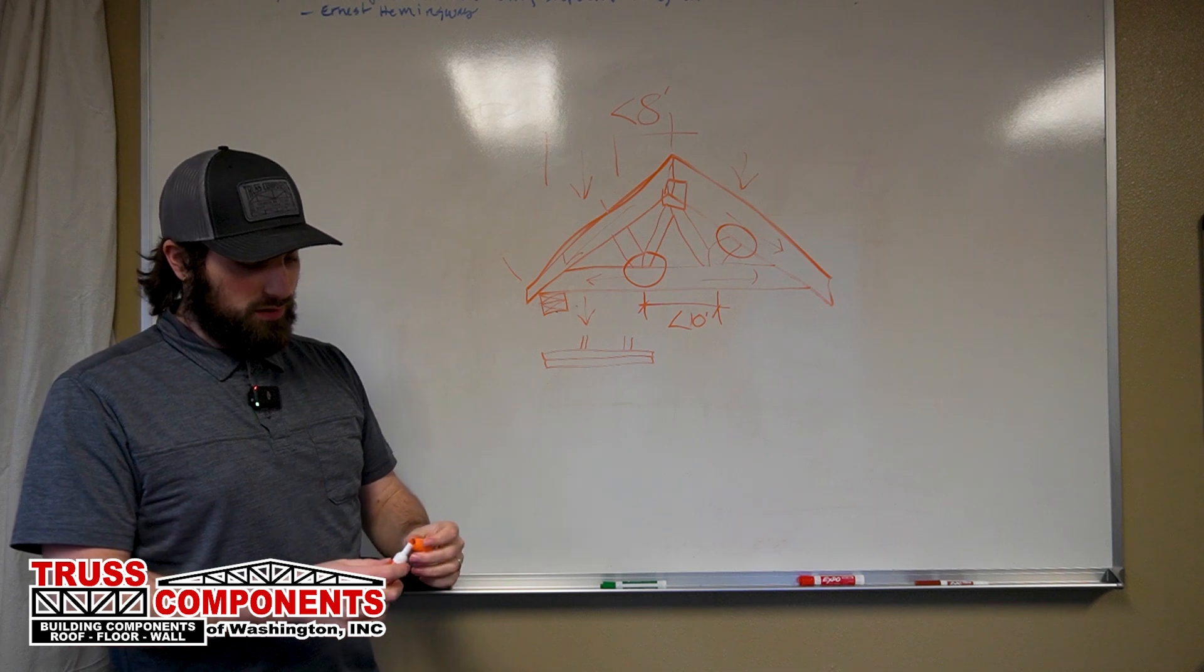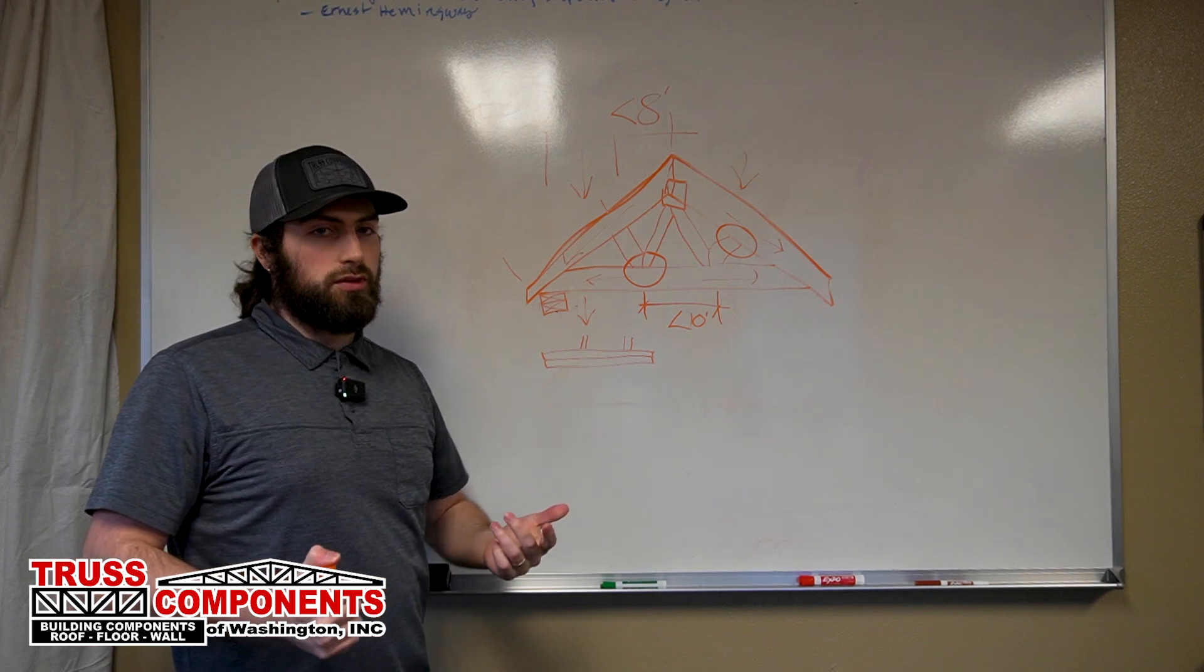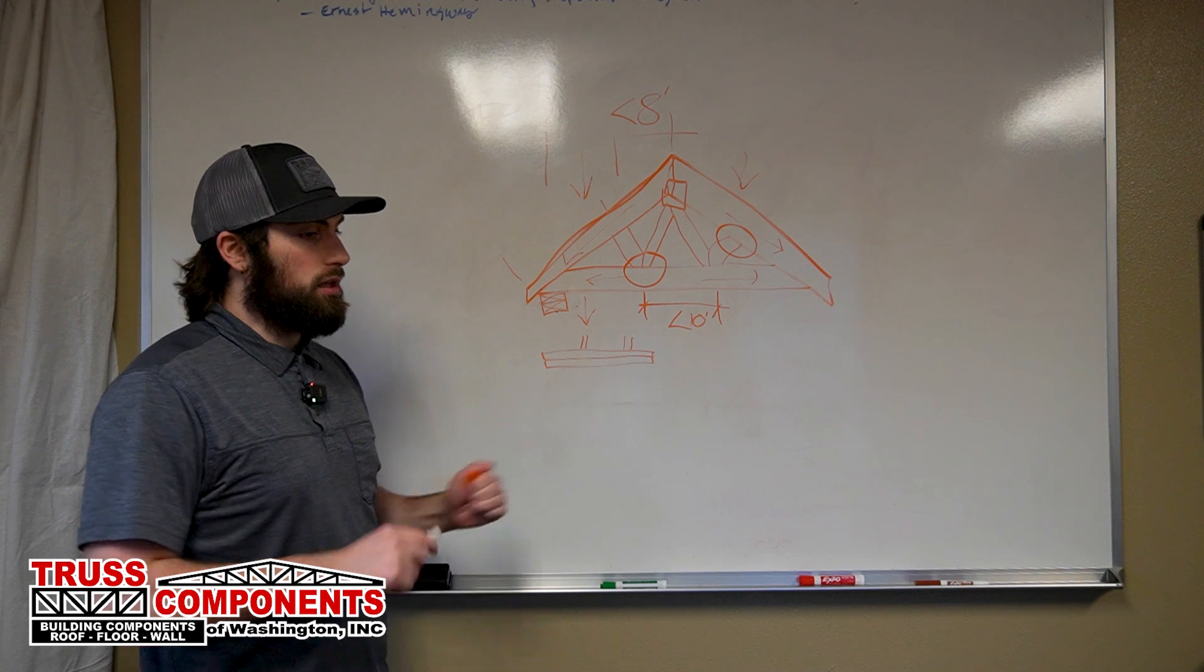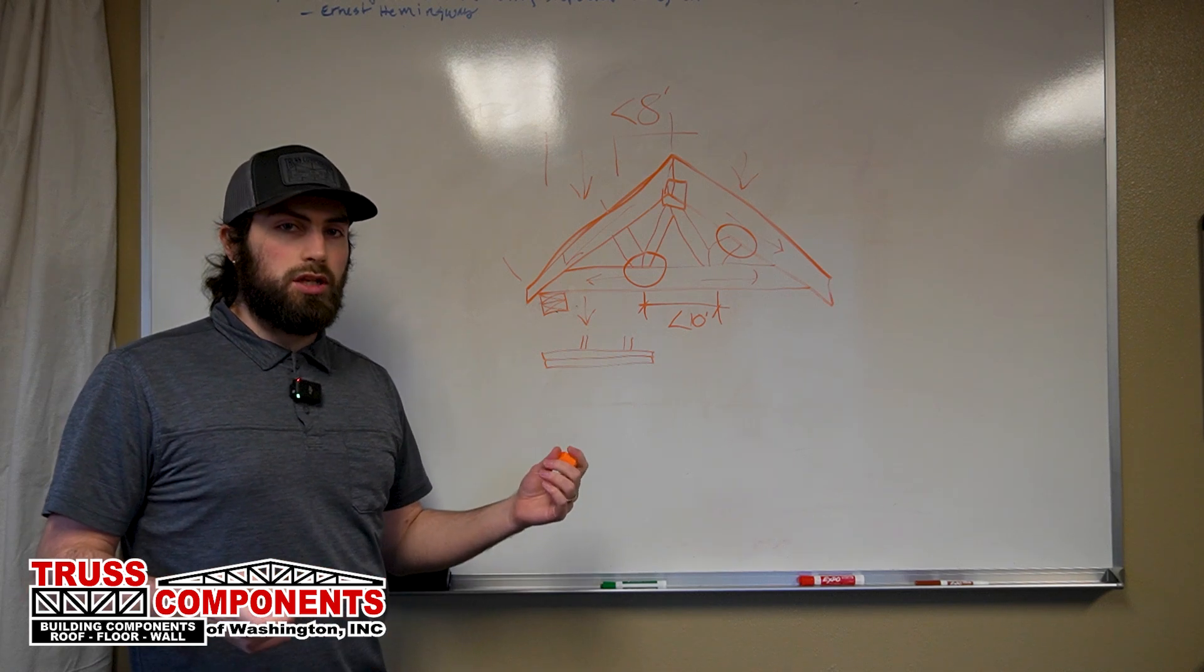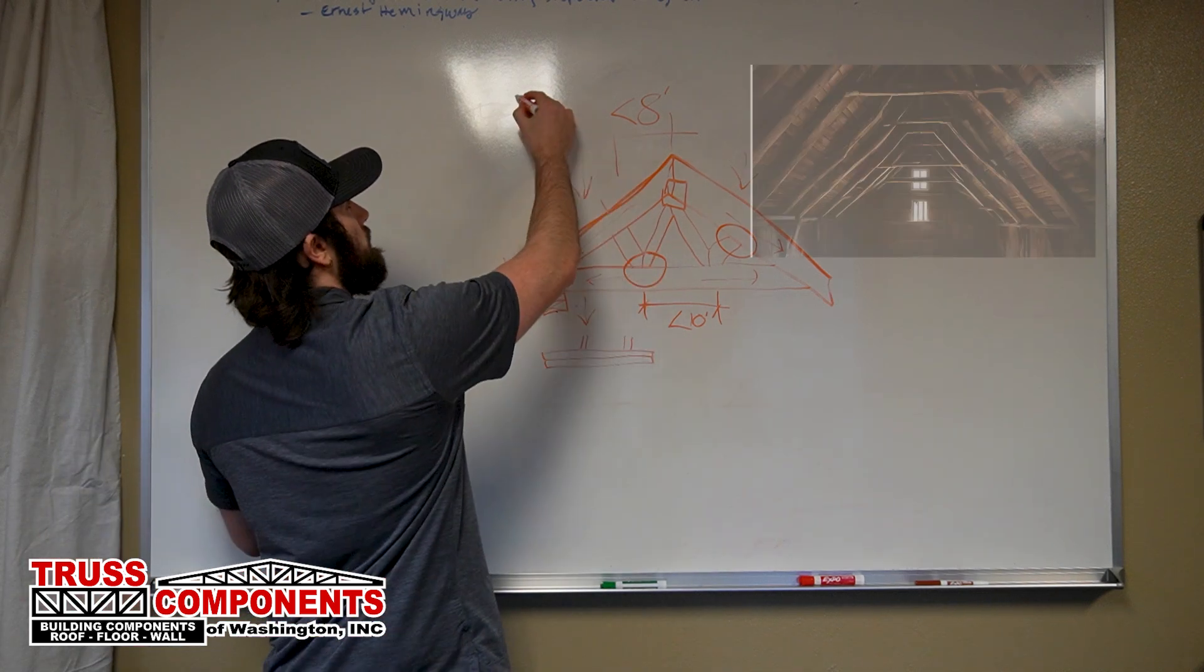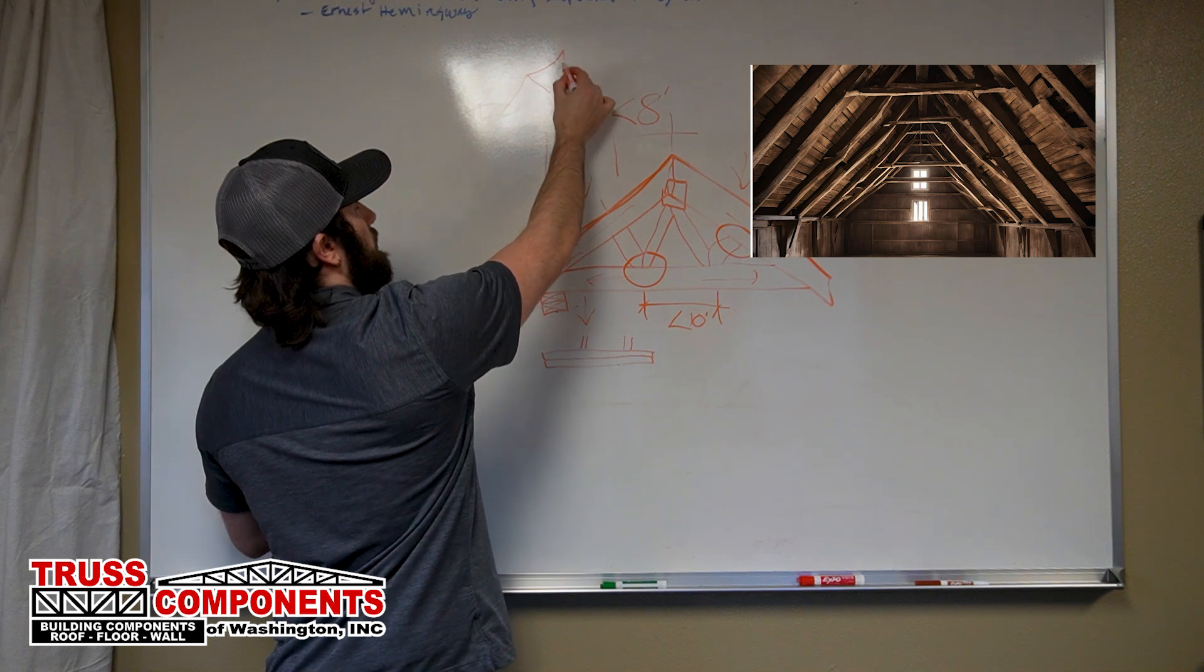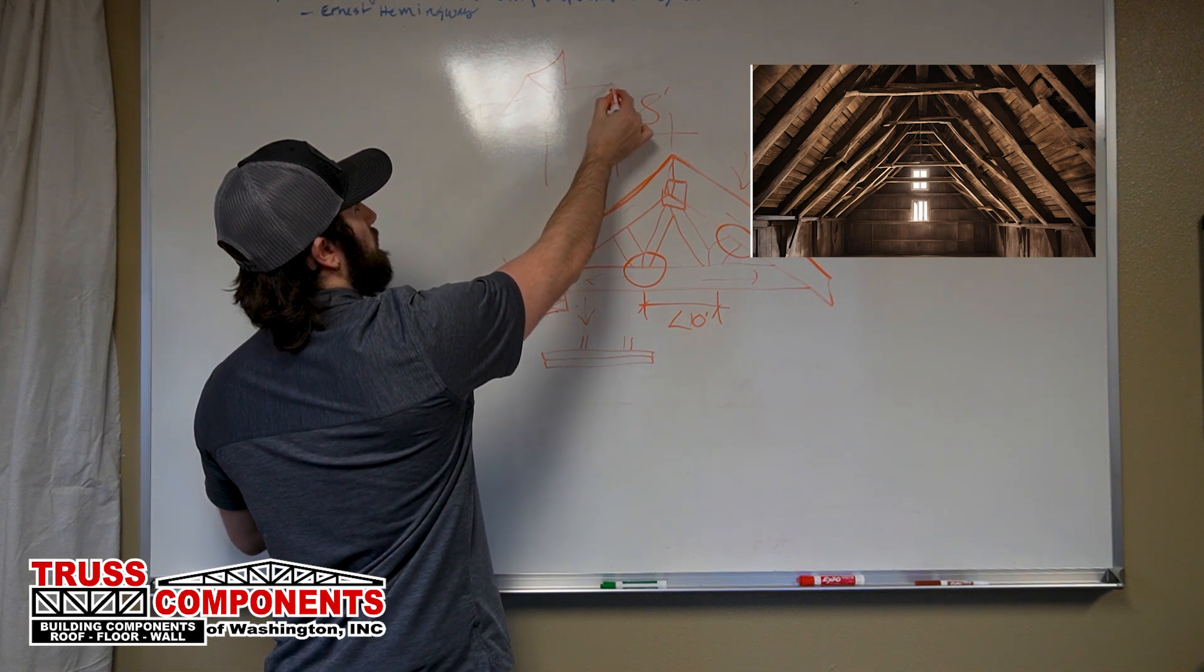So even if a two-by-four top chord is going to work in that snow load, we will increase the chord size to a two-by-six, which effectively eliminates the chance that you go up to your attic in 20 years and you see a truss that sags between those panel points.